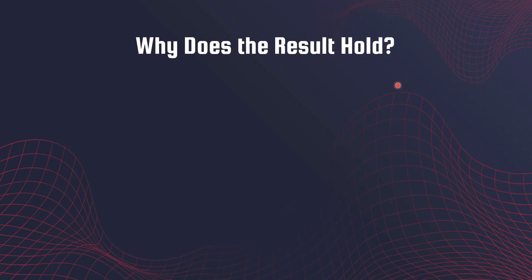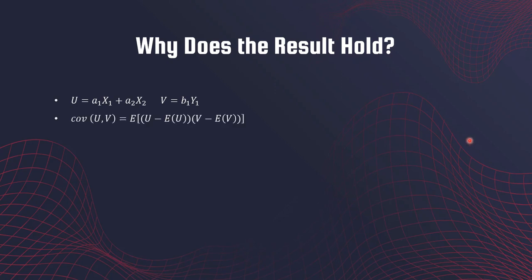To derive this result, I'll work out the calculations for the simple case with two variables in u and one variable in v. Always start from basic definitions — the goal is to calculate covariance between u and v. We know that covariance between any two random variables has a standard formula, regardless of what u and v are.